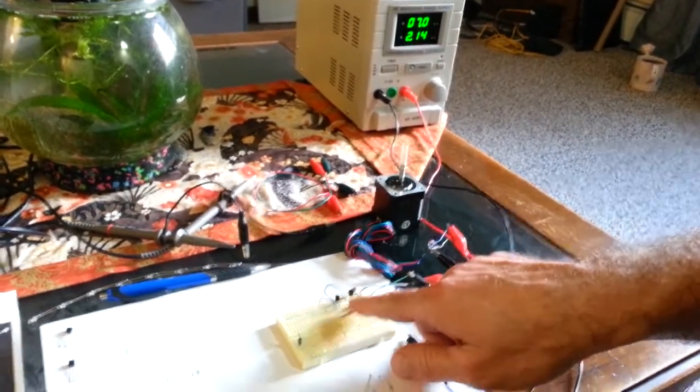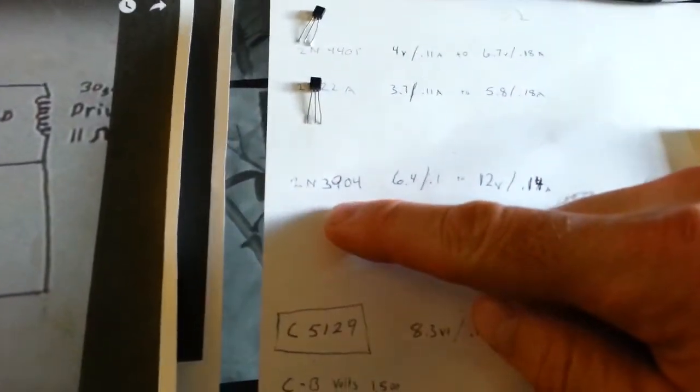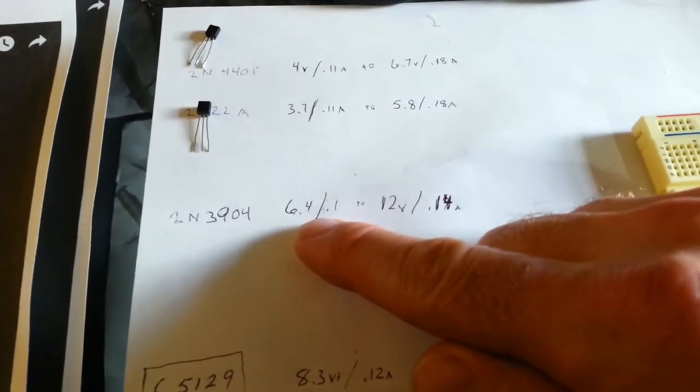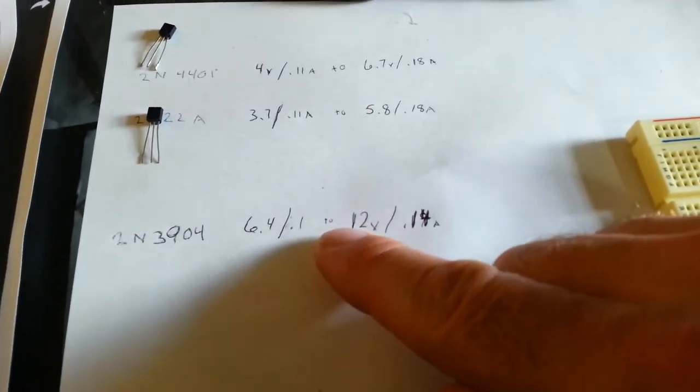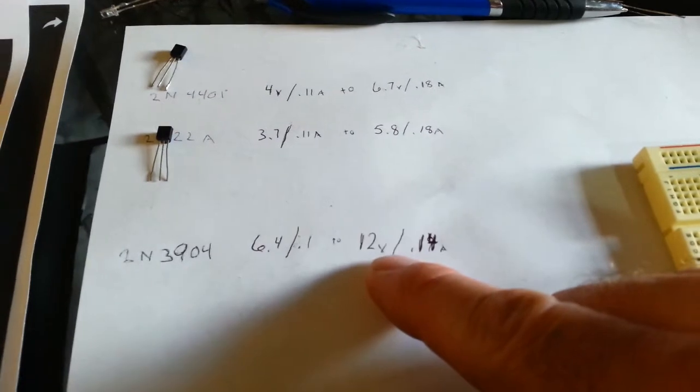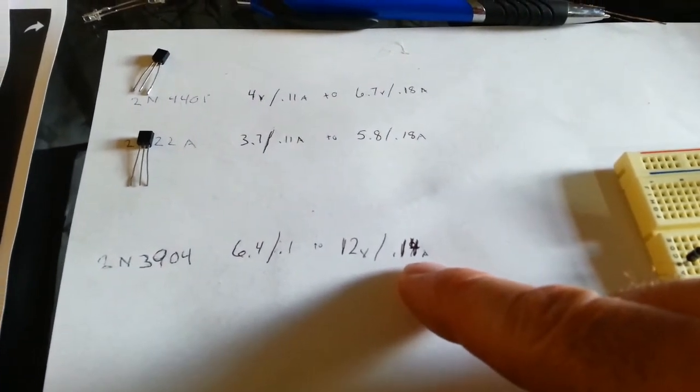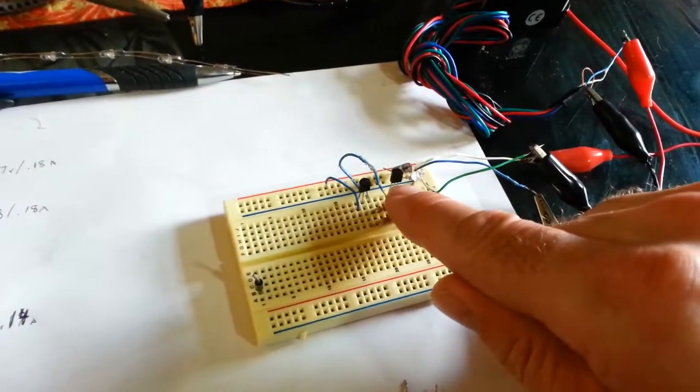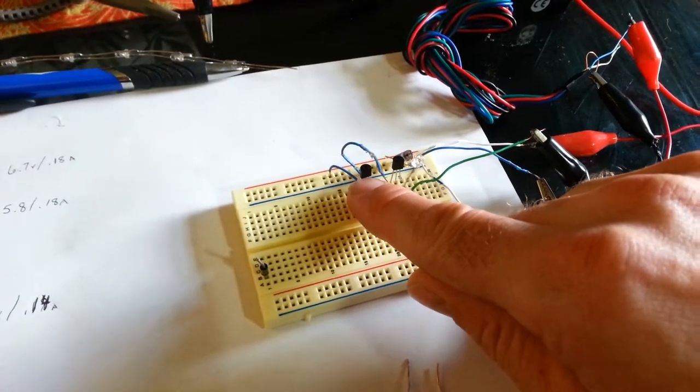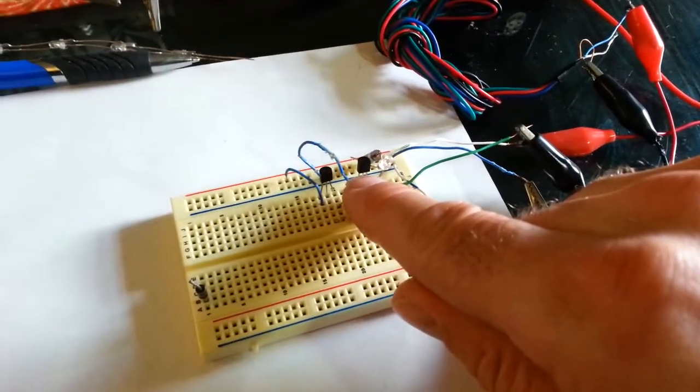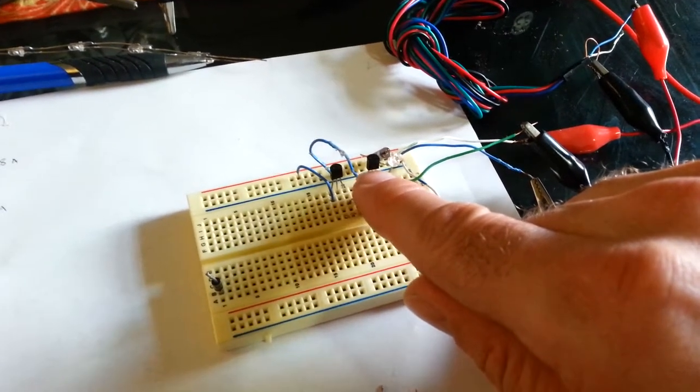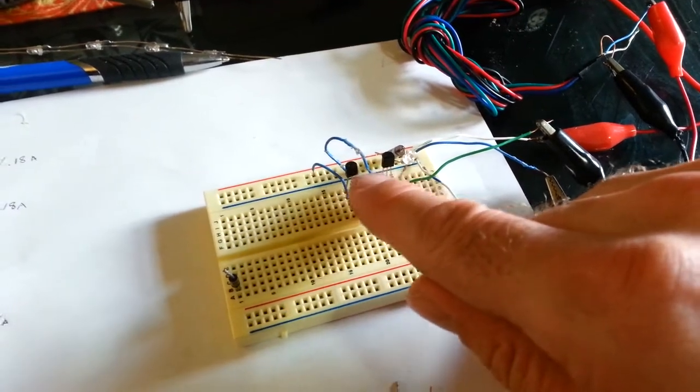For this next transistor, it's the 2N3904. It actually requires a little more voltage - the lowest reading I got was 6 volts. It's a little more efficient on the amperage because I can go all the way up to 12 volts at 0.14 amps. This transistor is actually the twin of this one - this is a PNP, and they just switched the values to make it an NPN. These two are actually paired really well together.